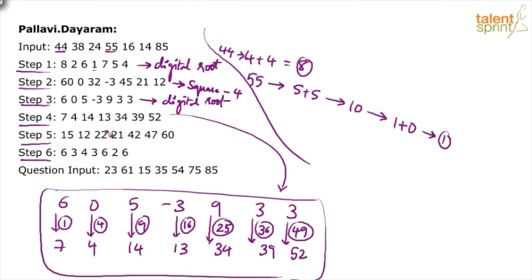Step 5 again. What happened in step 5? 7, 15, 4, 12, 14, 22. Oh, plus 8, right? 7 plus 8, 4 plus 8, 14 plus 8, 13 plus 8, 34 plus 8, 39 plus 8, 52 plus 8. So, this is like plus 8. And step 6 is the digital root again. 1 plus 5, 6. 1 plus 2, 3. 2 plus 2, 4. 2 plus 1, 3. 4 plus 2, 6 and so on.